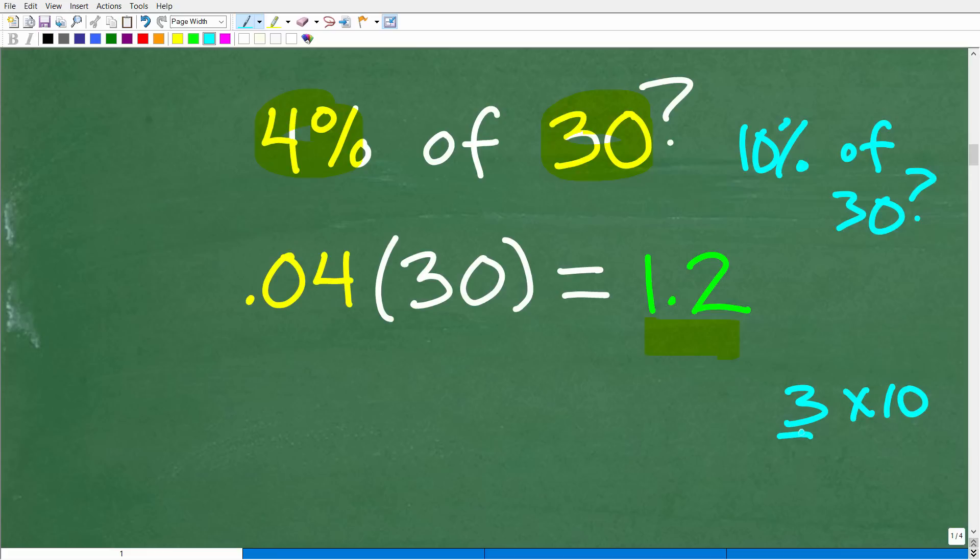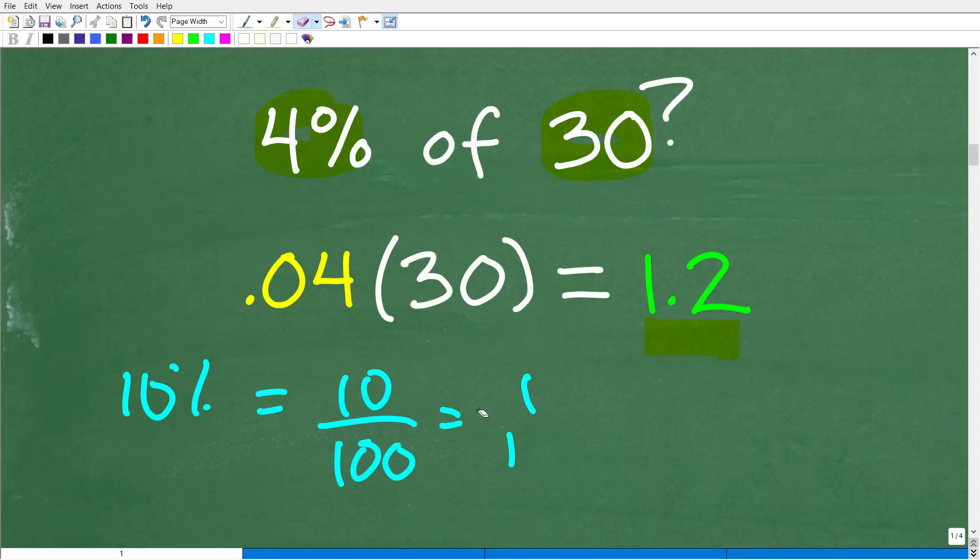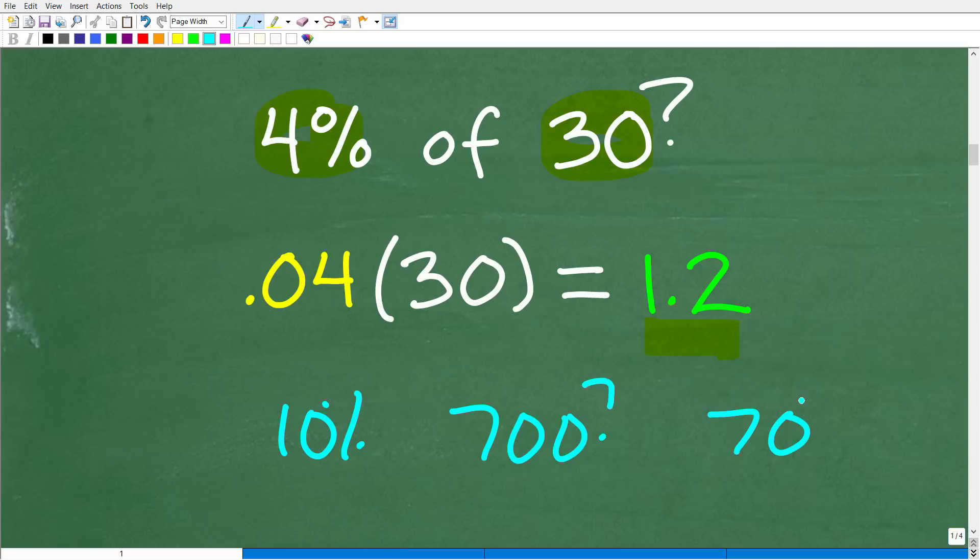Now, that is one-tenth of 30. So, 10%, again, as a fraction, that's 10 over 100, or one-tenth. So, one-tenth of 30 is going to be 30 divided by 10, which, of course, is 3. But I think most people are pretty good at estimating percents if you can just get 10% of a number. And that could be any number. So, for example, what is 10% of 700? 10% of 700 is 70. So hopefully that makes sense.